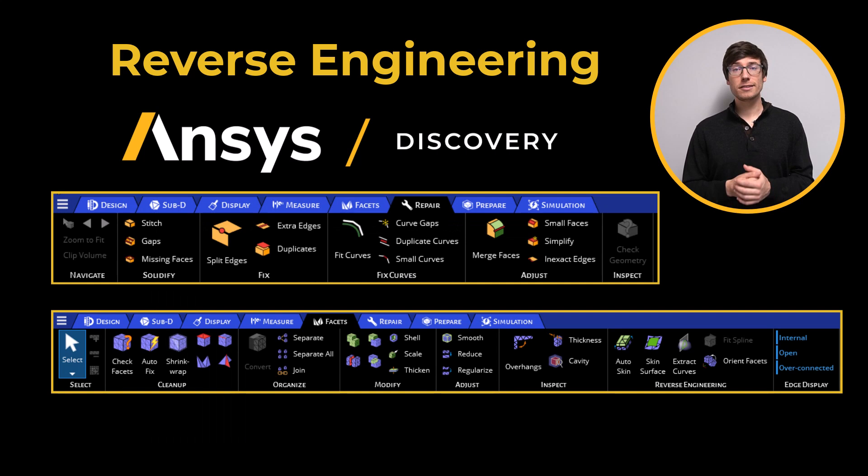ANSYS Discovery has STL repair tools that can fill in patches, holes, and missing faces. It can then blend these additions into the remaining geometry. This is useful for recreating a symmetrical part when you only have half of the original, or filling in the missing teeth of a gear, for example.